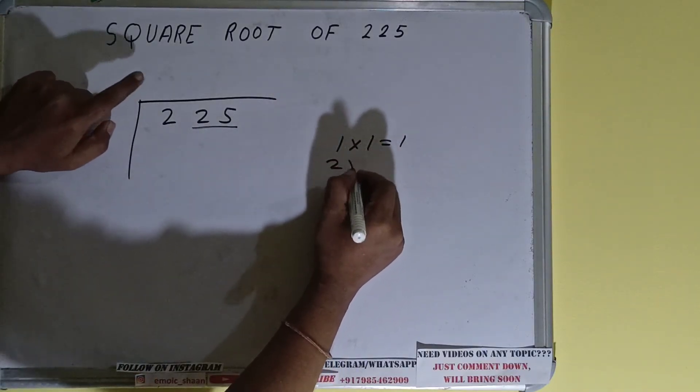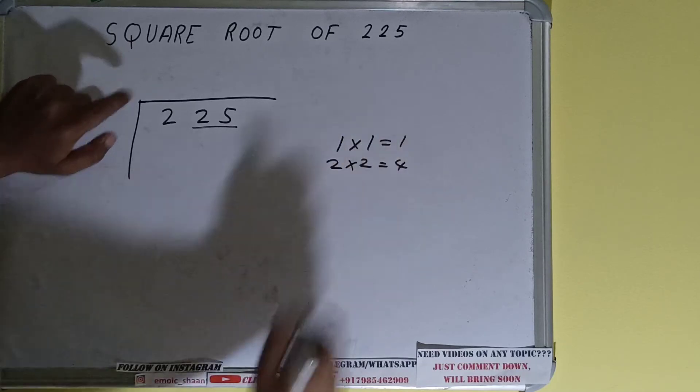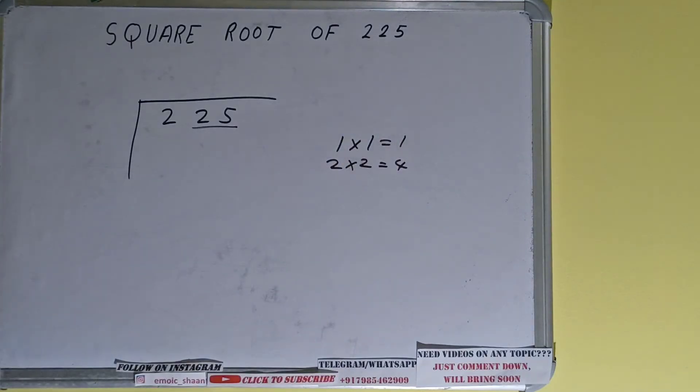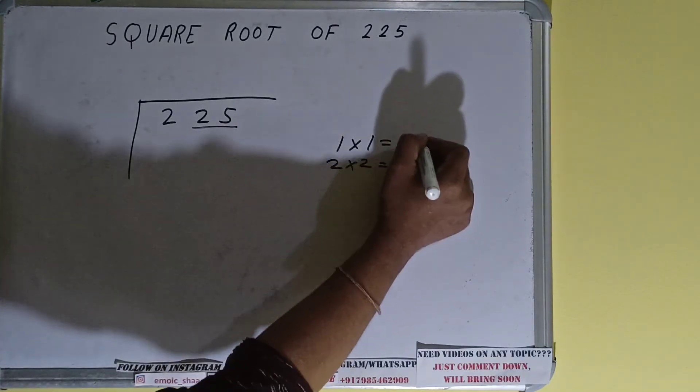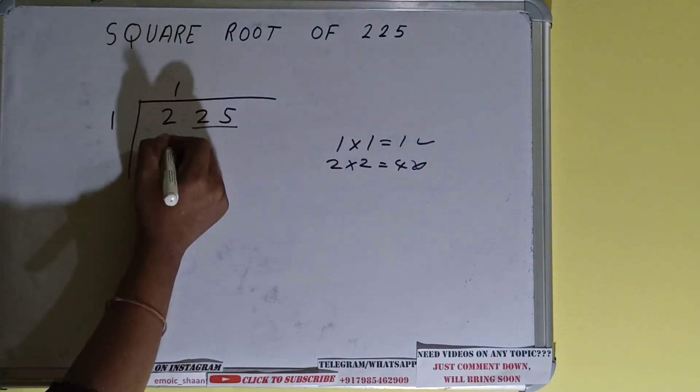If two here and two here it will give four. Now four we cannot use because four is greater than two, so we have to go with this one. So one here and one here, put one, subtract, it will be left with one.